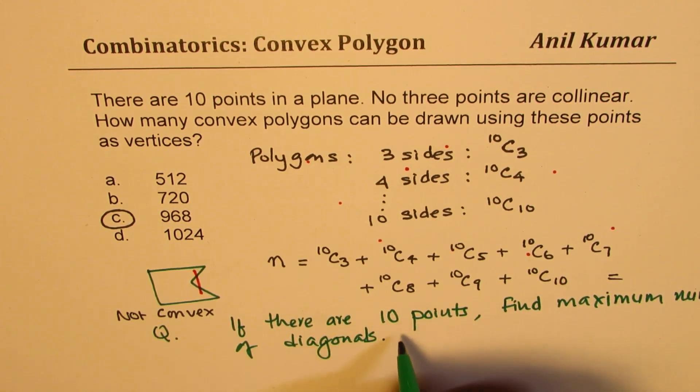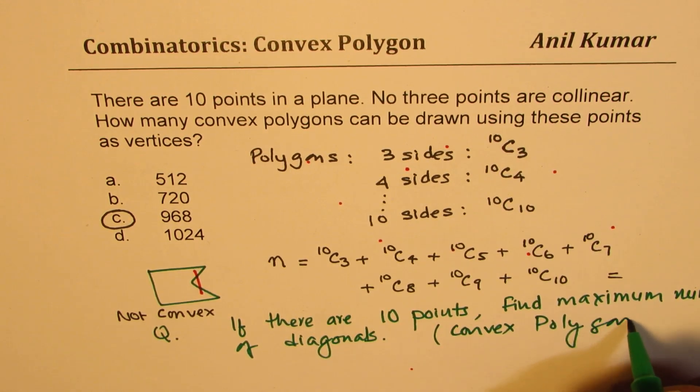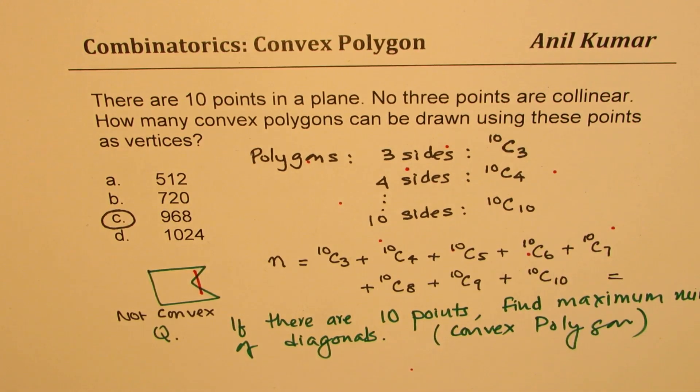Right? So, so number of diagonals, assume convex polygon, correct? So let this be the question for you, make an attempt to answer this question based on the concept which you have just learned.